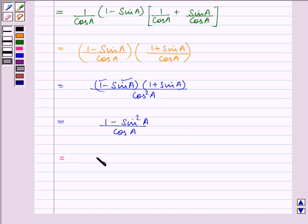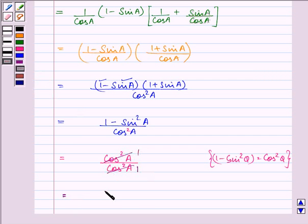Which is further equal to cos squared A upon cos squared A, which on simplifying gives us the answer as 1 which is the right hand side.